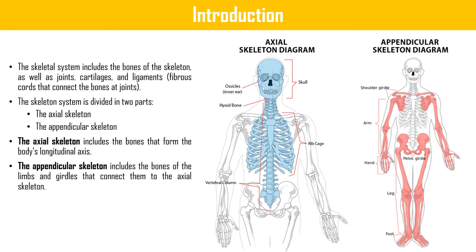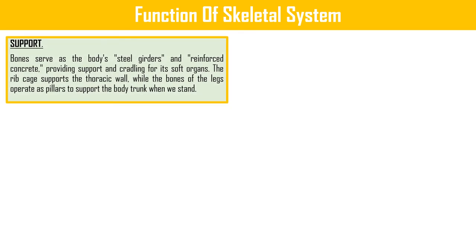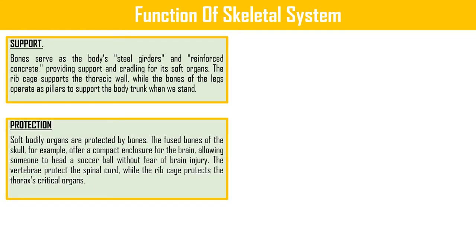Joints provide flexibility and allow movement in various regions of the skeleton. The first and most important function is support — bones serve as the body's steel girder and reinforced concrete, providing support and cradling for its soft organs. The ribcage supports the thoracic wall while the bones of the legs operate as pillars to support the body trunk when we stand.